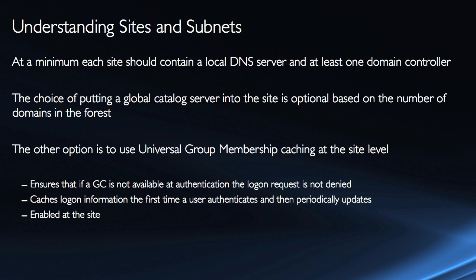What other things do we need to think about when dealing with sites? At a minimum, each site should contain a local DNS server and at least one domain controller. We ought to have more than that if at all possible, but this is basically the minimum. Placing a global catalog server in the site is optional, and that decision is based on the number of domains in the forest.